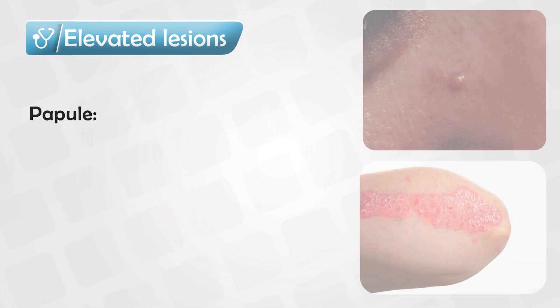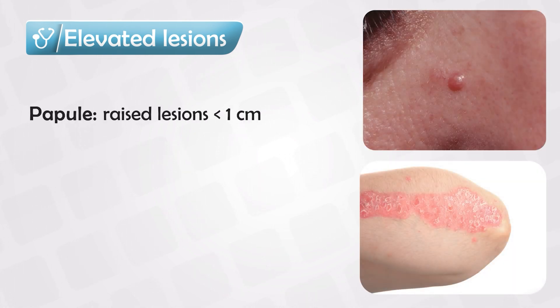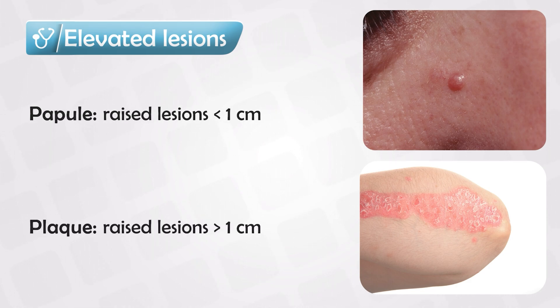Now, if the lesion rises above the skin — so it becomes raised or elevated — we look again at the size. If it's small, less than one centimeter, it will be known as a papule. And if it's large, more than one centimeter, it will be known as a plaque.